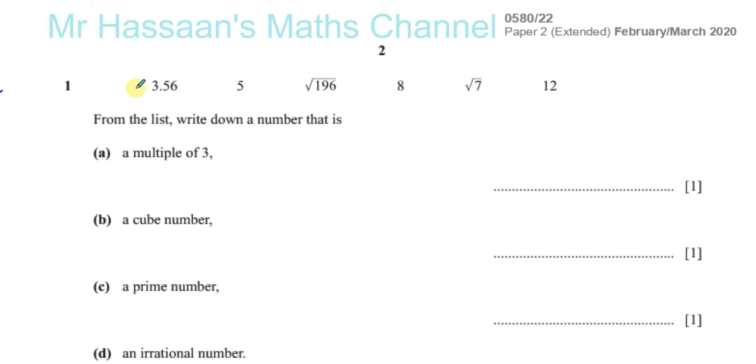So, if you look at the list, a multiple of three are the numbers that are in the three times table. Okay, like three, six, nine, twelve. Okay, so you can see that's twelve. That's a multiple of three. Okay, this is divisible by three. It gives you a whole number.